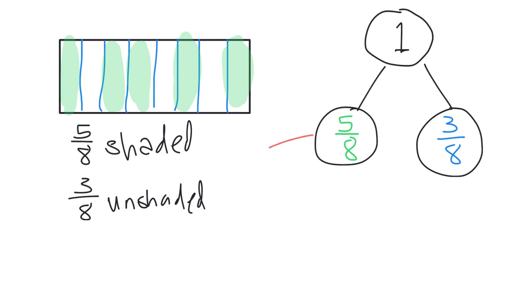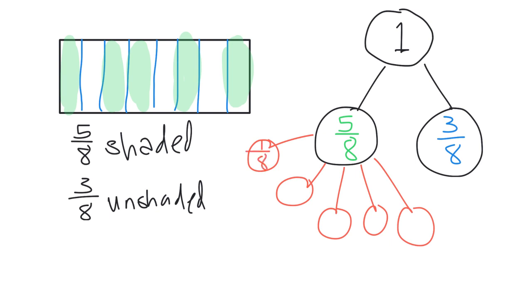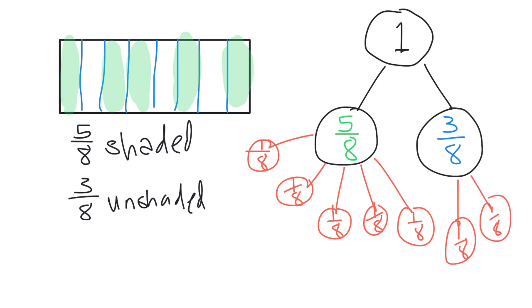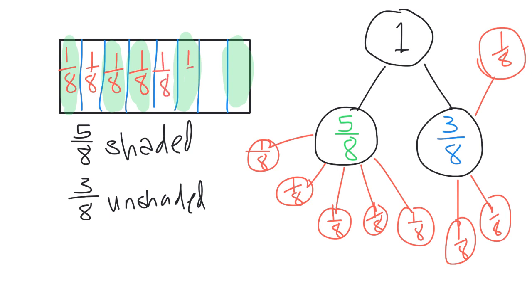Now if we want, we can also break up each of these into unit fractions. So I could call this one eighth, one eighth, one eighth, one eighth, one eighth — and then do the same thing here: one eighth, one eighth, one eighth. The idea is to recognize that each of these fraction pieces is a one eighth. So we can represent that in the shape, but we can also represent that in the number bond. The main part of the number bond is one whole, five eighths, and three eighths — but then we can further break it down into unit fractions if we choose.